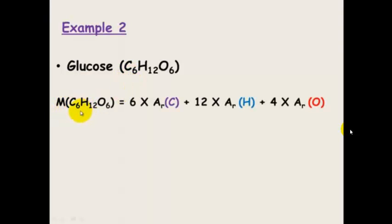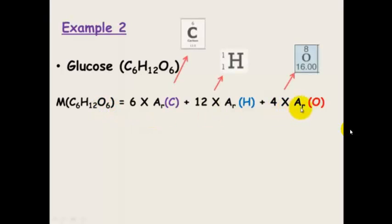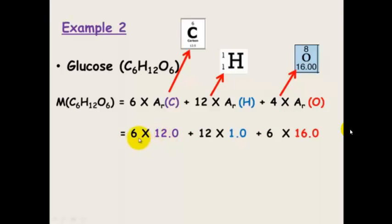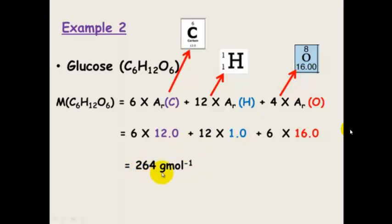Glucose. The molar mass of glucose is 6 times carbon's relative atomic mass, plus 12 times hydrogen's relative atomic mass, plus 6 times oxygen's relative atomic mass. We get those again from the periodic table. So it's 6 × 12, because each carbon has a relative atomic mass of 12; 12 × 1, because each hydrogen has a relative atomic mass of 1; and 6 × 16. Add those all together and you'll get 180 grams per mole. Remember your units — this is vital.